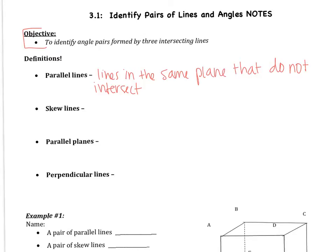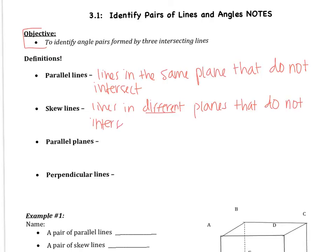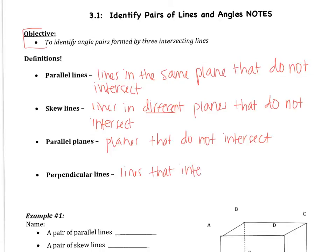They never cross. Skew lines are lines in different planes that do not intersect. Parallel planes are just planes that do not intersect. And perpendicular lines — we have already talked about these — are lines that intersect to form a right angle, a 90-degree angle. Perpendicular lines are going to be in the same plane.